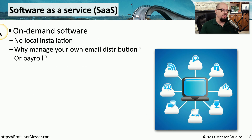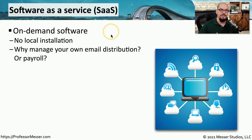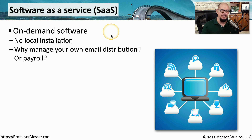Another popular cloud model is software as a service, or SaaS. With software as a service, you don't have to create the software, you don't have to manage the infrastructure, and you don't have to create or manage any hardware. This means if you need to send emails from an email distribution system, you don't have to manage any of that system — you only have to provide the content for the emails.